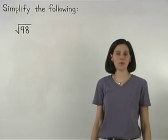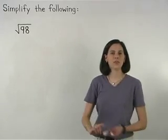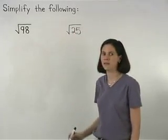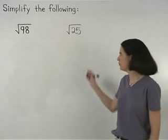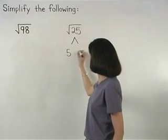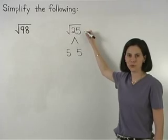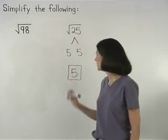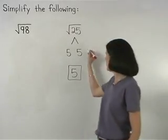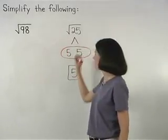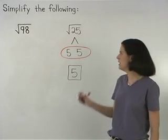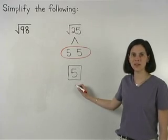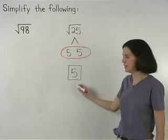To understand how, let's take a look at the problem from the previous example, the square root of 25. Since 25 factors as 5 times 5, the square root of 25 is 5. In other words, since we have a pair of factors that are the same, one of these factors — in this case, 5 — can come out of the radical. So the square root of 25 is 5.